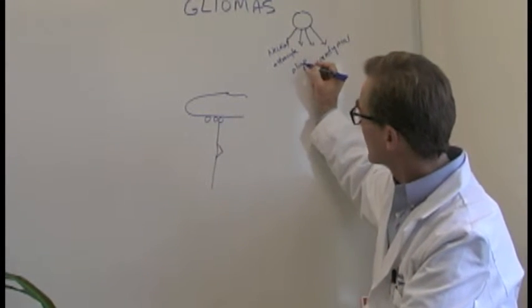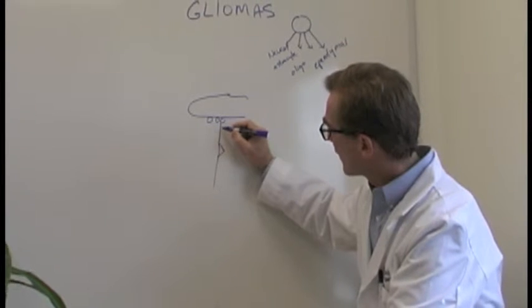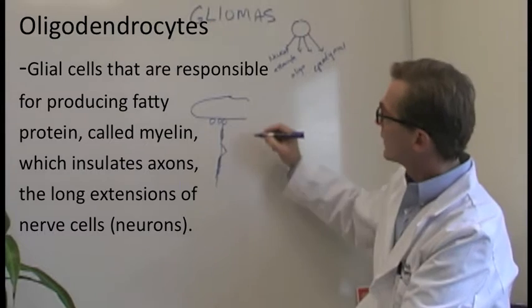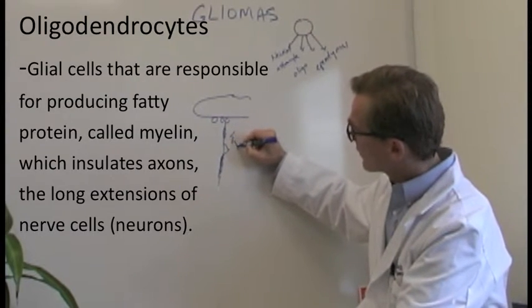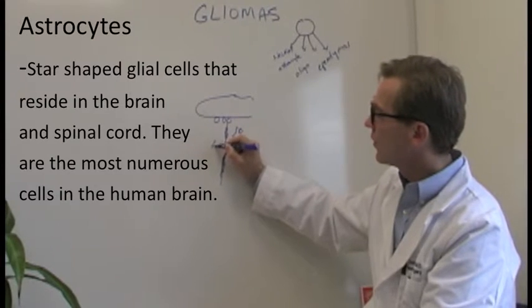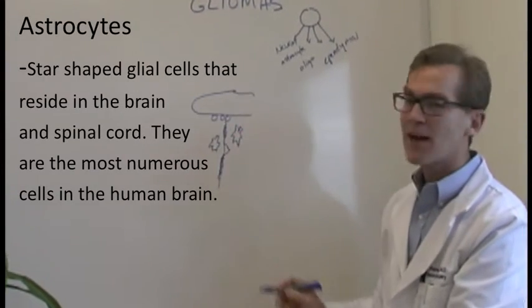The oligo cells are the cells that wrap around the neuron processes and insulate them. The astrocytes are the cells that, as in their name, look like stars and sort of hold all this stuff together like the scaffolding.